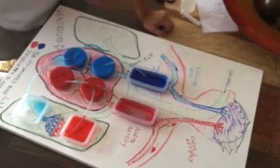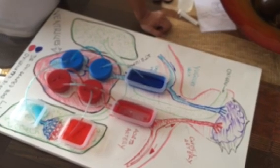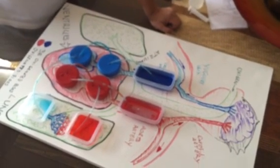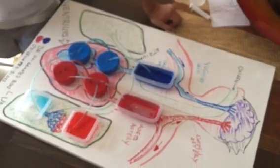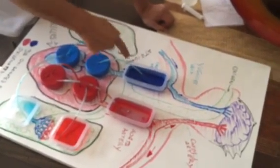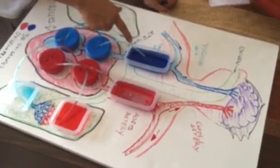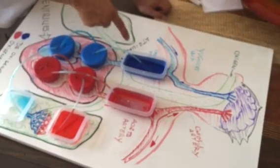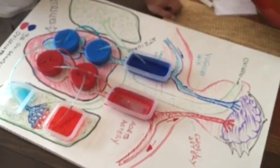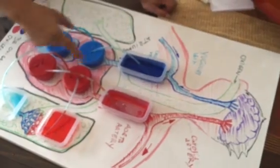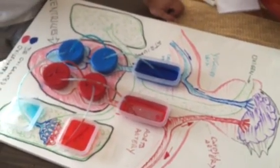What we are trying to do is demonstrate the function of the human heart. We have dyed water with blue to represent deoxygenated blood and red water to represent oxygenated blood.